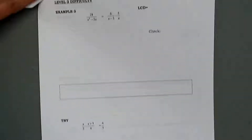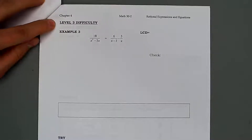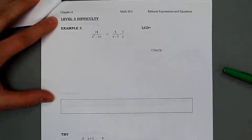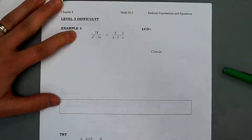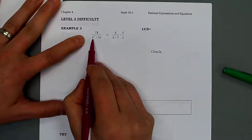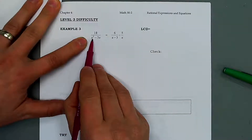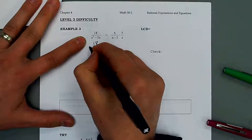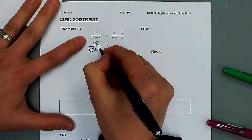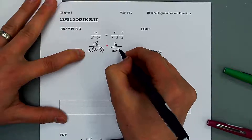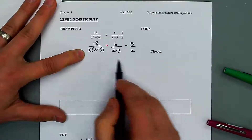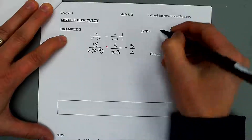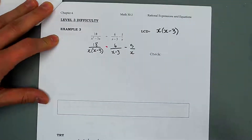We're going to step things up and look at a level 3 difficulty example. The lowest common denominator initially looks a little ambiguous, but there is some factoring that might make things more clean. Factoring the bottom left, we can take an x out as a GCF leaving x(x minus 3). The right side has x minus 3 and x. So we really only see two different things: an x and an x minus 3, and that is our lowest common denominator.